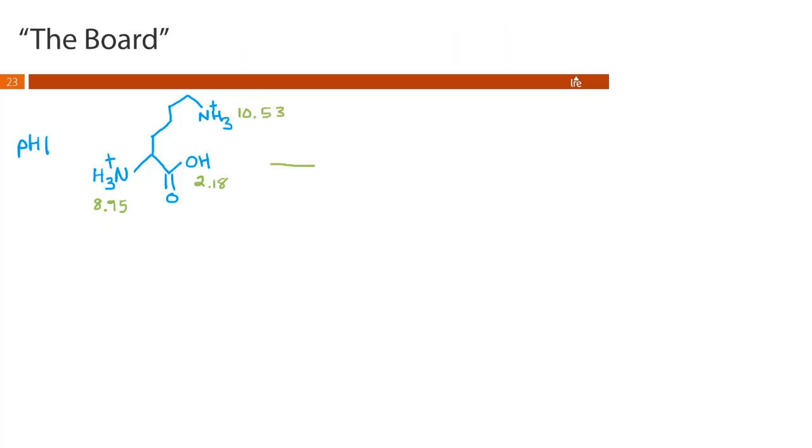Okay so same as before we're gonna move up from pH 1 all the way to pH 14, all the way from an acidic environment to a basic environment. So our first pKa that we're going to reach is 2.18. As we approach 2.18 we're gonna start losing this proton on our carboxyl group.